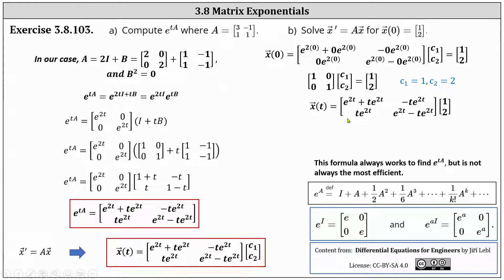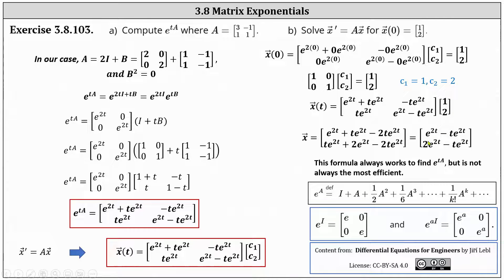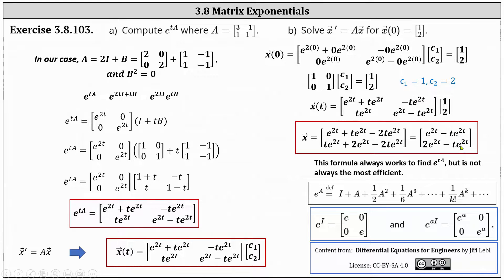Therefore, the particular solution is x of t equals the matrix exponential times the vector one, two. We didn't actually need to show all this work because e to the power of zero A equals the identity matrix, so whatever x of zero equals gives us our constant vector C. Multiplying and simplifying, the particular solution is x equals the vector with components e to the two t plus t·e to the two t and two·e to the two t minus t·e to the two t.